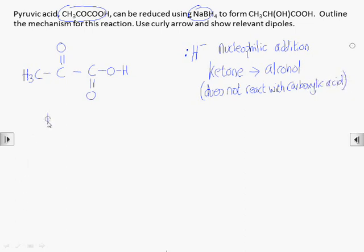The mechanism starts with the H- ion donating its two electrons to form a covalent bond to the electron deficient carbon of the carbonyl group in the ketone. The C-O double bond is polar because oxygen is more electronegative than carbon.